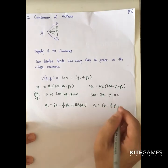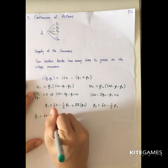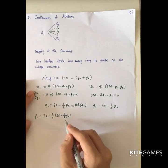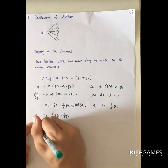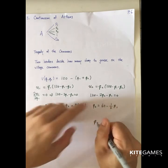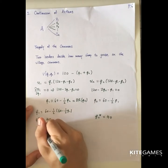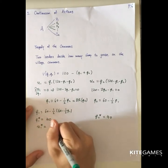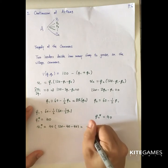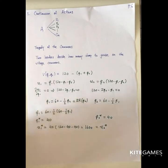Substituting herder two's best response into herder one's: k1 = 60 minus one-half times (60 minus one-half k1). Solving this with one variable, the optimal k1* = 40. Substituting back gives k2* = 40 as well. Each herder's payoff is 40 × (120 − 40 − 40) = 1,600, and this is exactly equal to herder two's payoff.